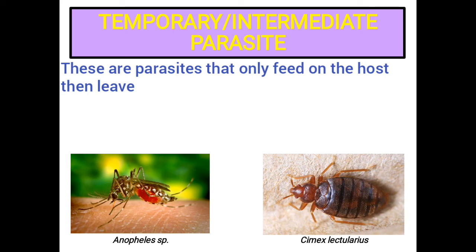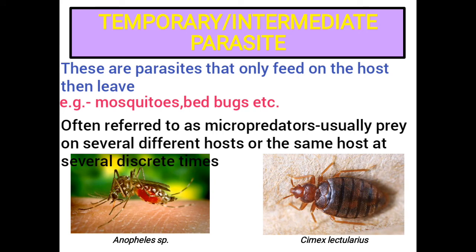Temporary or Intermediate parasites: These are parasites that only feed on the host and then leave. Examples include mosquito, bedbug, etc. Temporary parasites are often referred to as micro-predators, as they usually prey on several different hosts or on the same host at several discrete times.